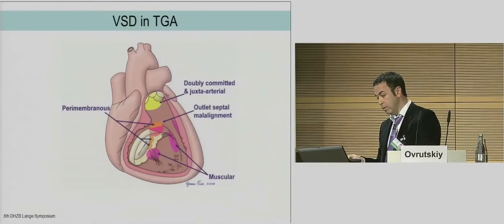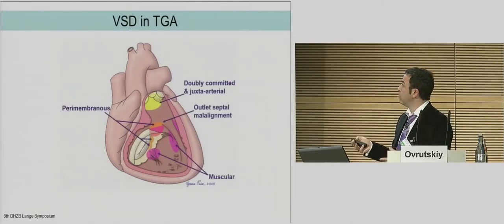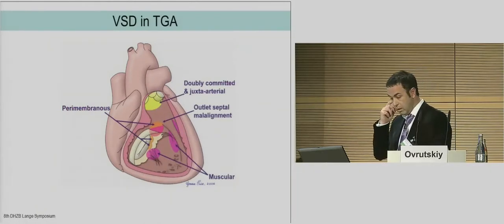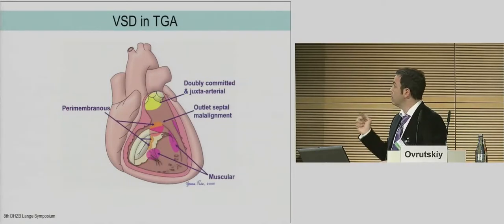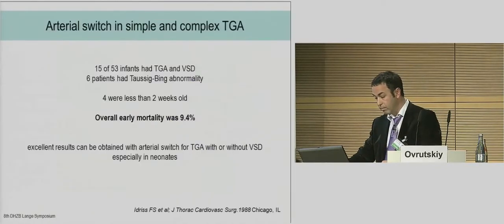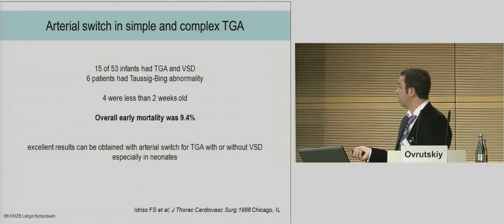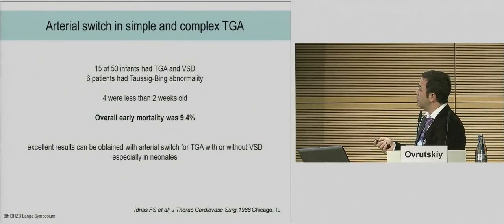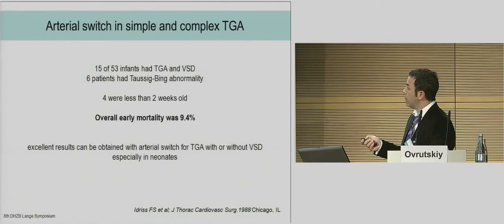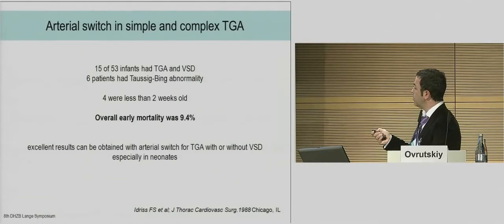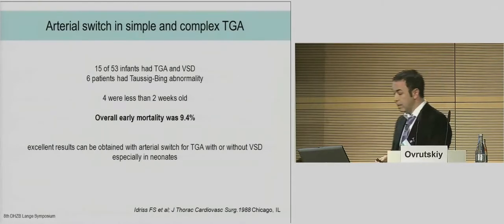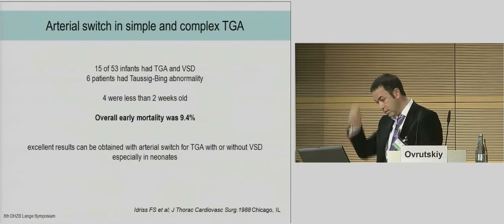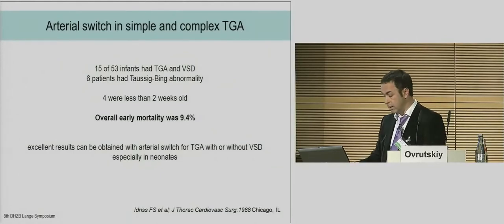This is especially important when considering the necessity for valve surgery, and when thinking that during VSD closure the semilunar valves can be damaged. This is a 1988 publication from Chicago — Idris — a well-known publication: 15 of 50 with TGA and VSD, and 6 of them with Taussig-Bing. Excellent results could be obtained with patients with and without VSD.